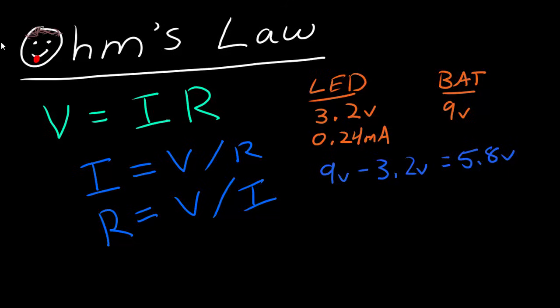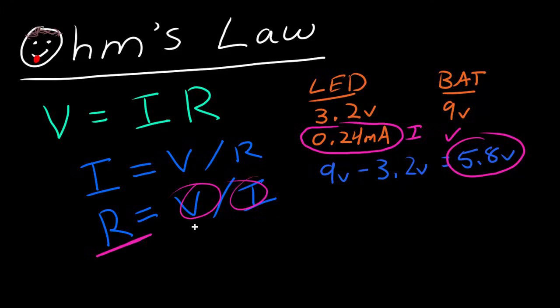that gets us 5.8 volts. So we needed something in our circuit that would waste or take away 5.8 volts. That way the LED is left with its maximum 3.2 volts. So if we take a look at this a bit more closely, we know two of the variables. We know 5.8 volts, and we also know the current, the maximum current we want to run through our circuit, which in the example here is 0.24 milliamps. So we know current, we know I, we know voltage. So if we know voltage and I, we can solve for resistance.